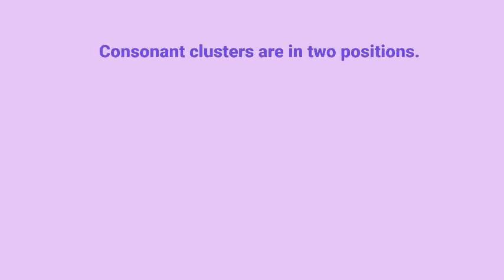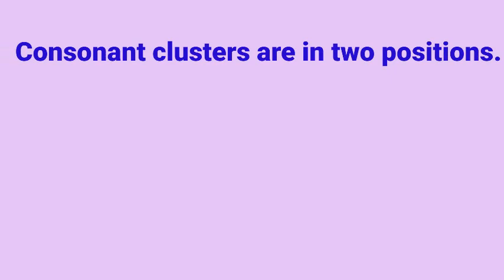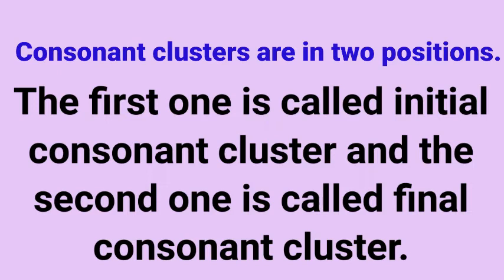Consonant clusters are in two positions. Consonant cluster دو حالتوں میں استعمال ہوتے ہیں۔ The first one is called initial consonant cluster — پہلے کو ہم ابتدائی یعنی initial consonant cluster کہتے ہیں۔ And the second one is called final consonant cluster — اور دوسرے کو ہم final یعنی آخری consonant cluster کہتے ہیں۔